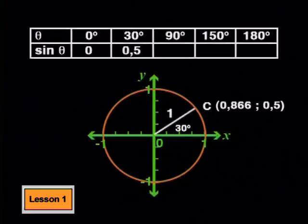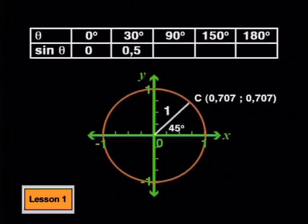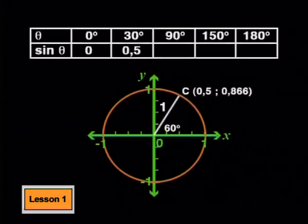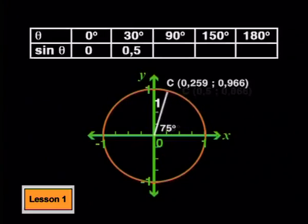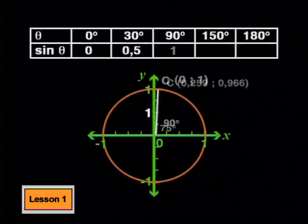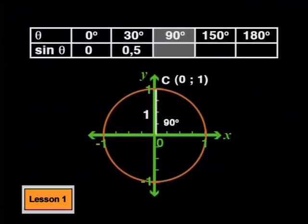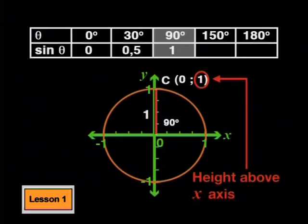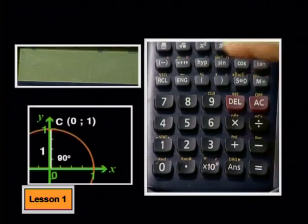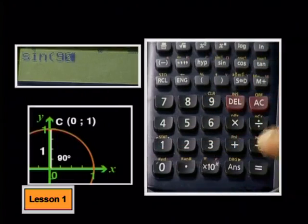As we carry on rotating the line in the unit circle, do you see that as the angle increases, the sin theta value or the height of the point is also increasing? Now, the angle has moved through to 90 degrees. What answer do you expect to get for sine of 90 degrees? You get 1. Again, this makes sense. We are on the y-axis and the radius of the circle is 1. The height of the line is also 1. If you check this on your calculator, sin 90 is 1.